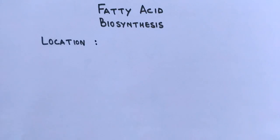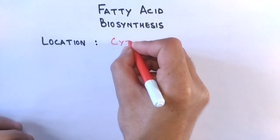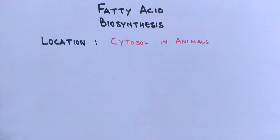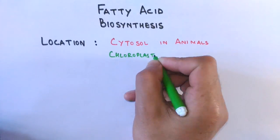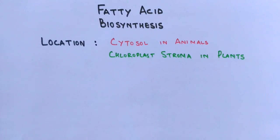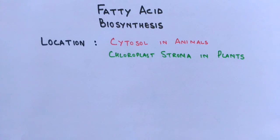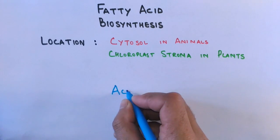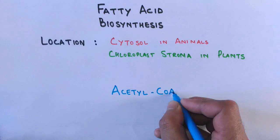First of all, the location of fatty acid biosynthesis is the cytosol of the cell in the case of animals. In the case of plants it's the chloroplast stroma, but in this video we'll be discussing fatty acid synthesis in animals — that is, in the cytosol.